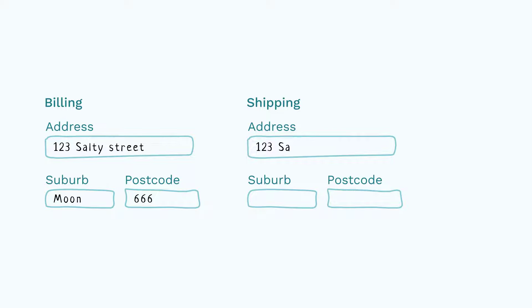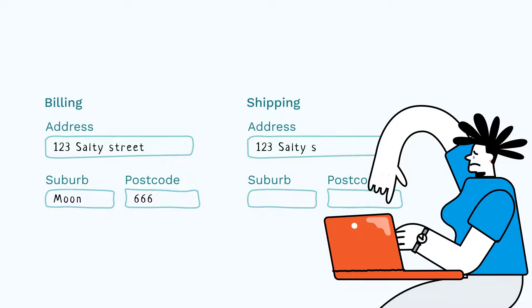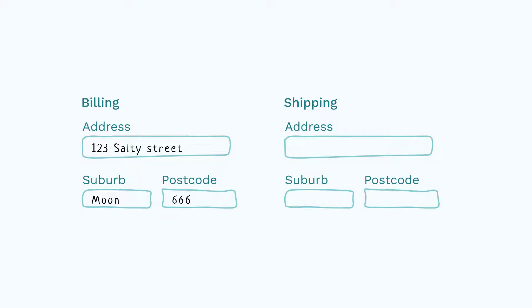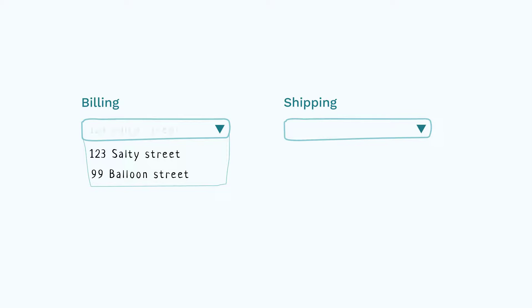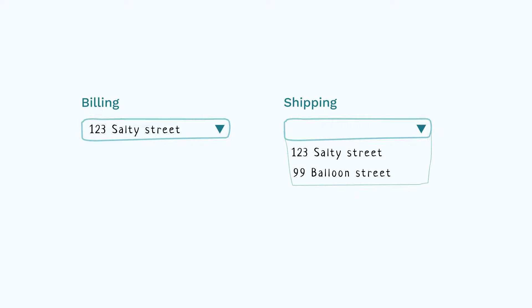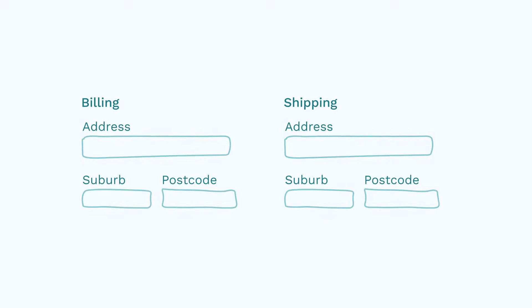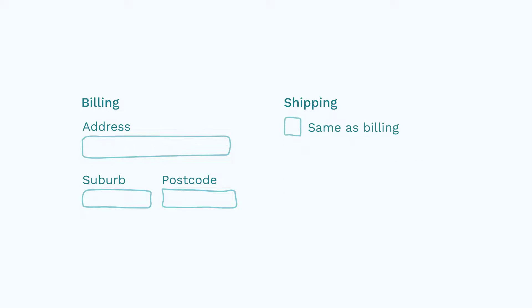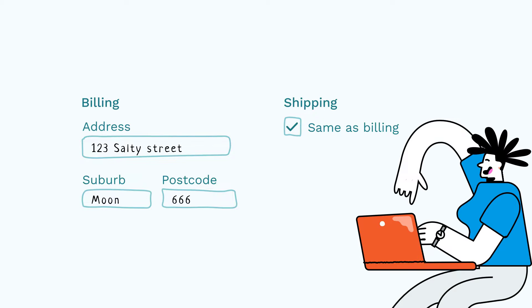If a person does have to re-enter the same information during a process, there are a few options. 1. Allow people to copy and paste information on the page, like from our billing field to our shipping field. 2. Allow people to fill in the form from a drop-down list. 3. Autofill the information. Or 4. Tick a checkbox to populate inputs with the same values as previously entered. This is the most common and usable pattern for our billing and shipping address example.